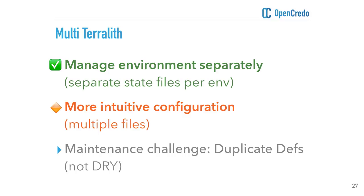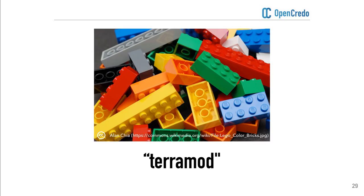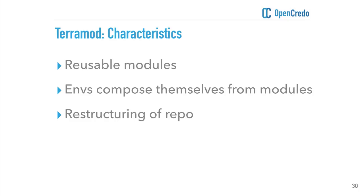We move on to the third evolution of our Terraform setup, which I would call the TerraMod setup. As the name implies, it's a version of Terraform that really makes use of modules to create reusable components that you can start composing your infrastructure out of. Terraform has built-in support for modules, and we're going to use this as the base building block to change our setup. The key characteristic is reusable modules that the environment definitions compose themselves from.